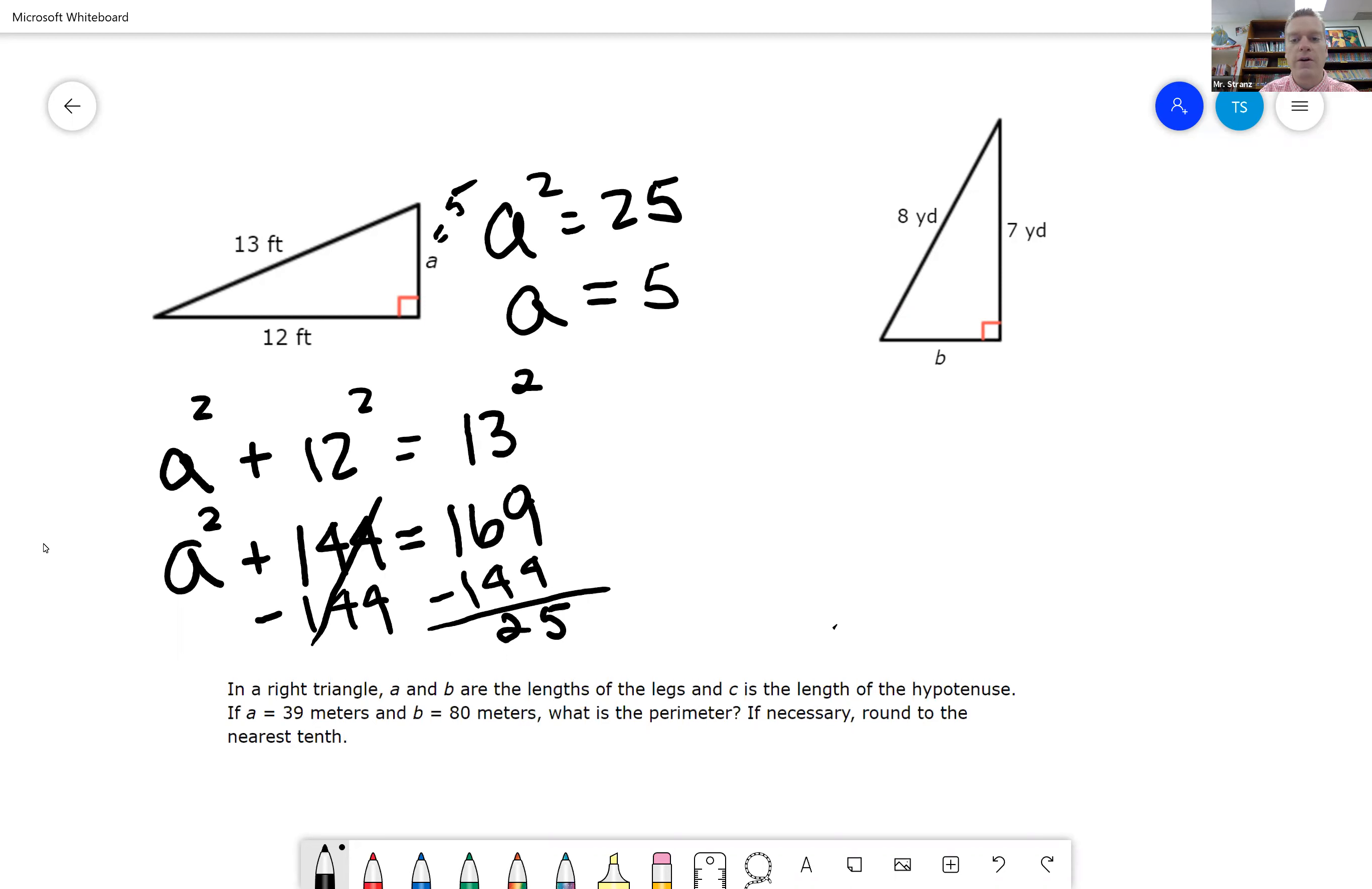Looking at the next one, 8 yards, 7 yards, and B. So we have our A, which is 7 squared plus B squared equals our C squared, our hypotenuse, which is 8 squared.